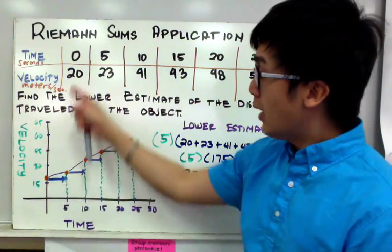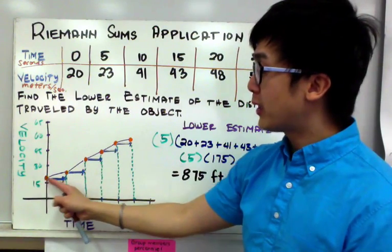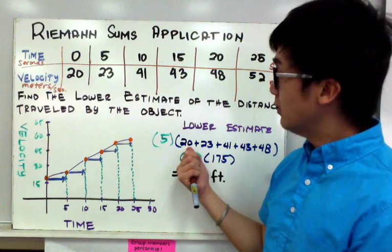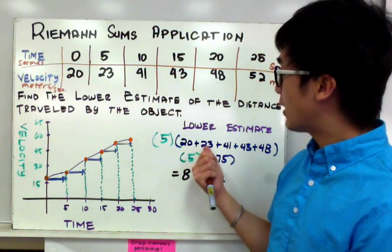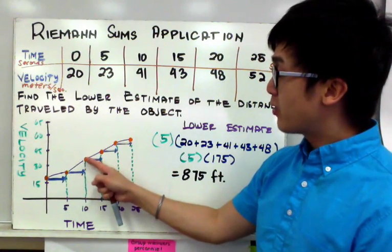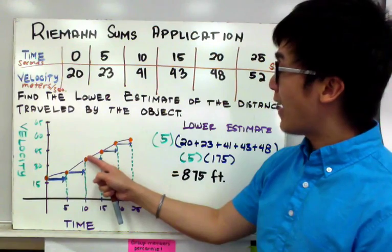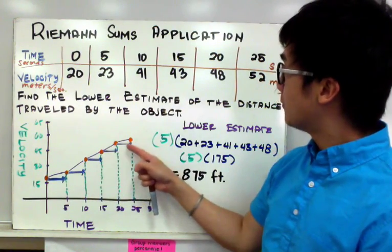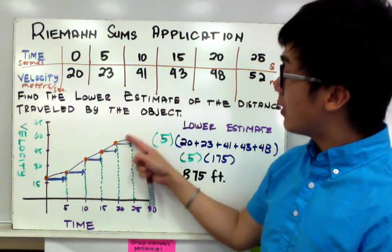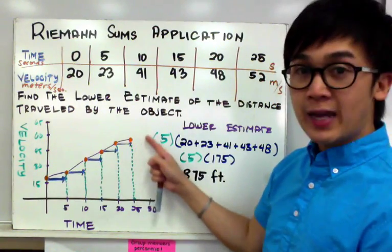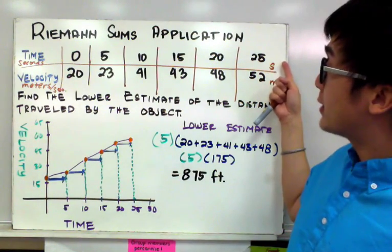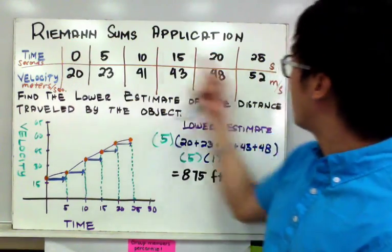Since it's the lower estimate, we're going to start at the lowest endpoint of our graph, which starts at 20. We'll start from 0 with a value of 20 for our first rectangle, moving to the right. The next lower estimated values are 23, then 41, then 43, and then 48. We're not going to use 52 meters per second because it won't cover the last interval of the object moving from 0 to 25 seconds.